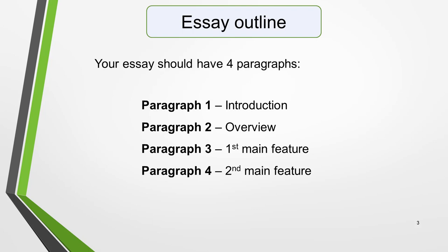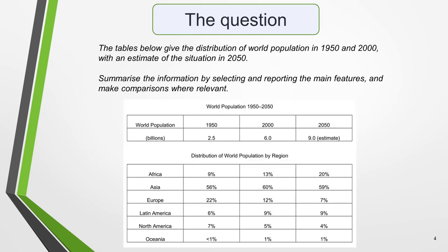We now have everything we need to begin planning and writing our table chart essay. Here's our practice question. The table below gives a distribution of world population in 1950 and 2000 with an estimate of the situation in 2050. Summarise the information by selecting and reporting the main features and make comparisons where relevant. Write at least 150 words.